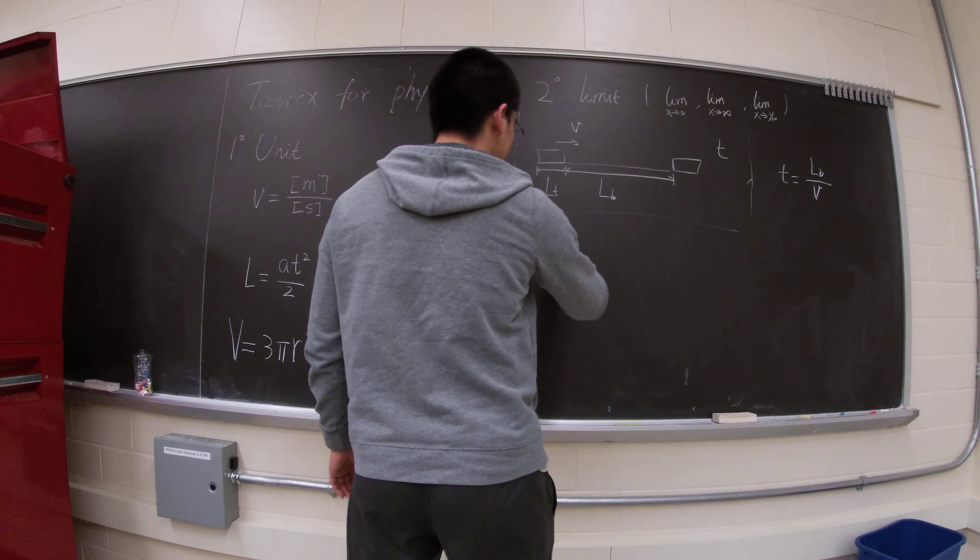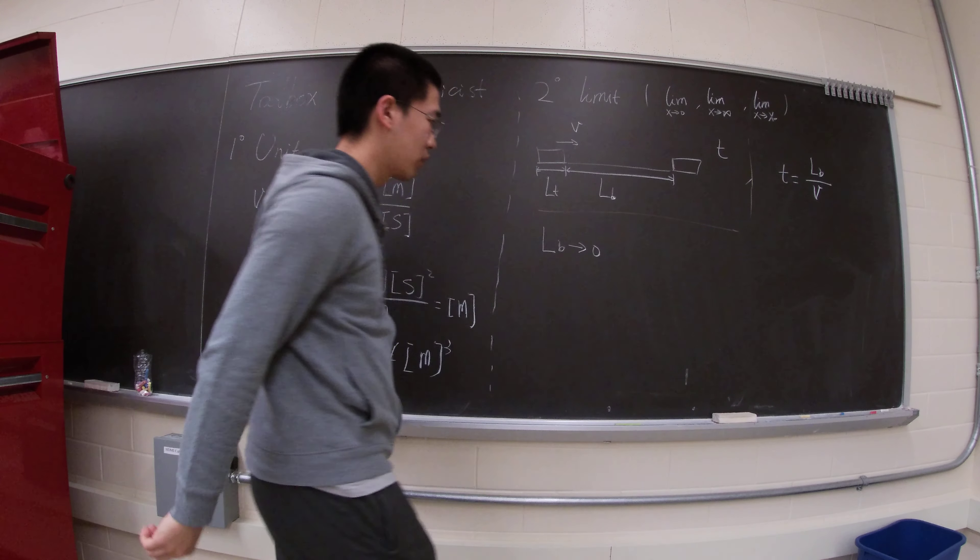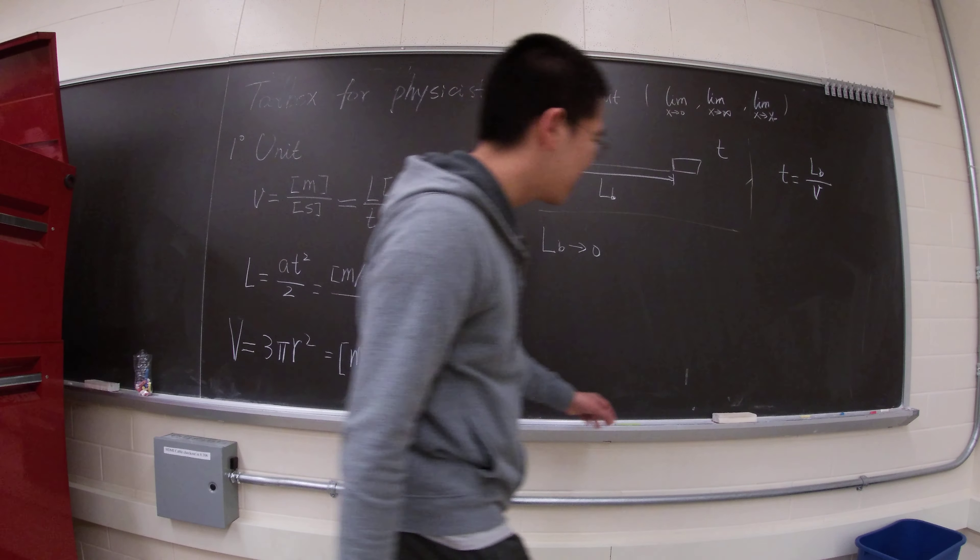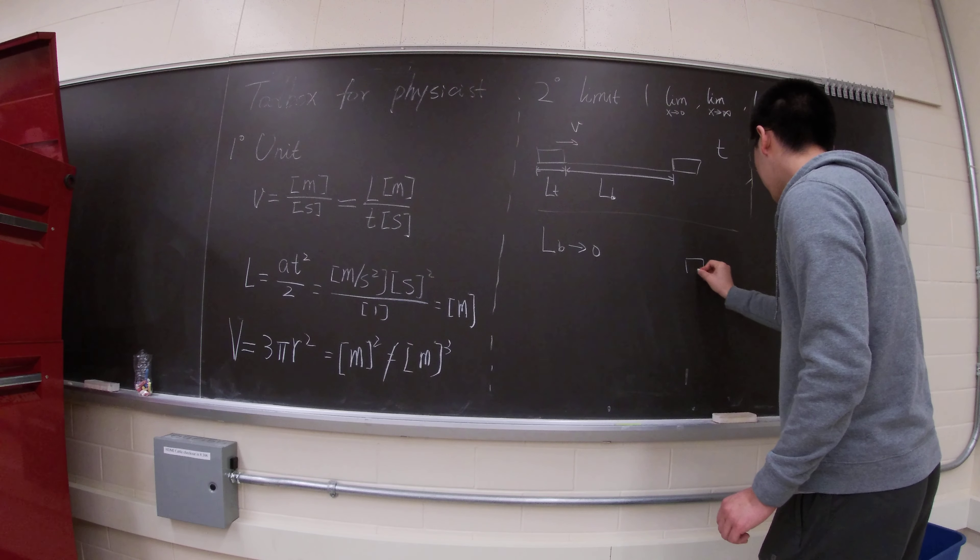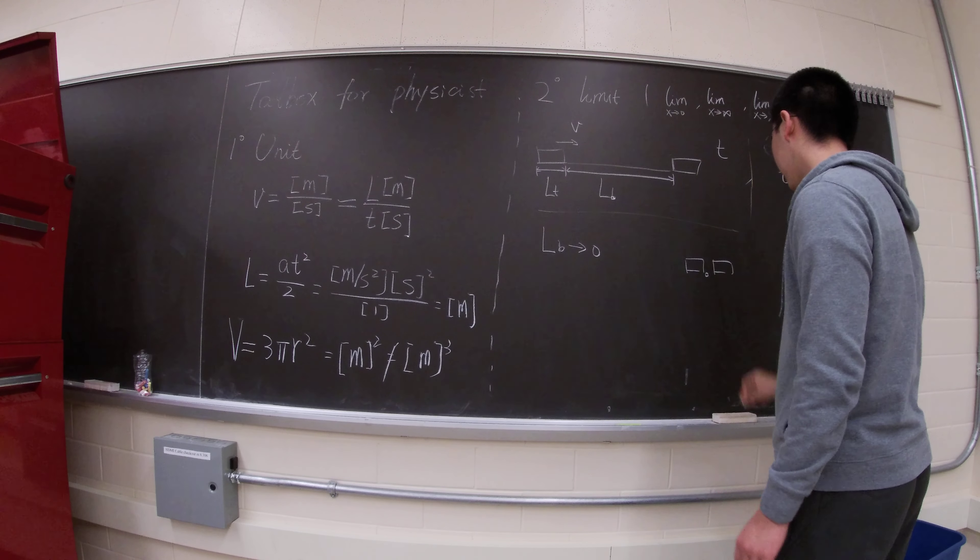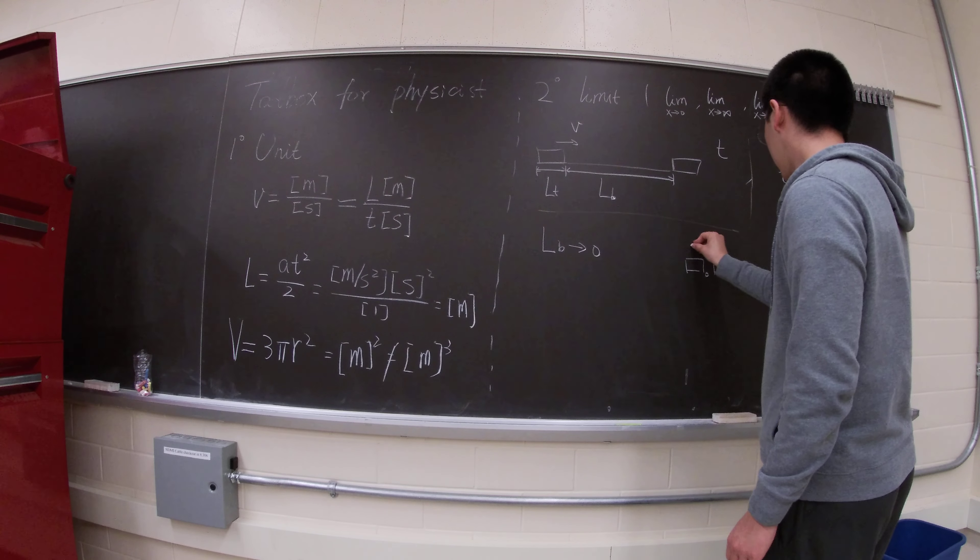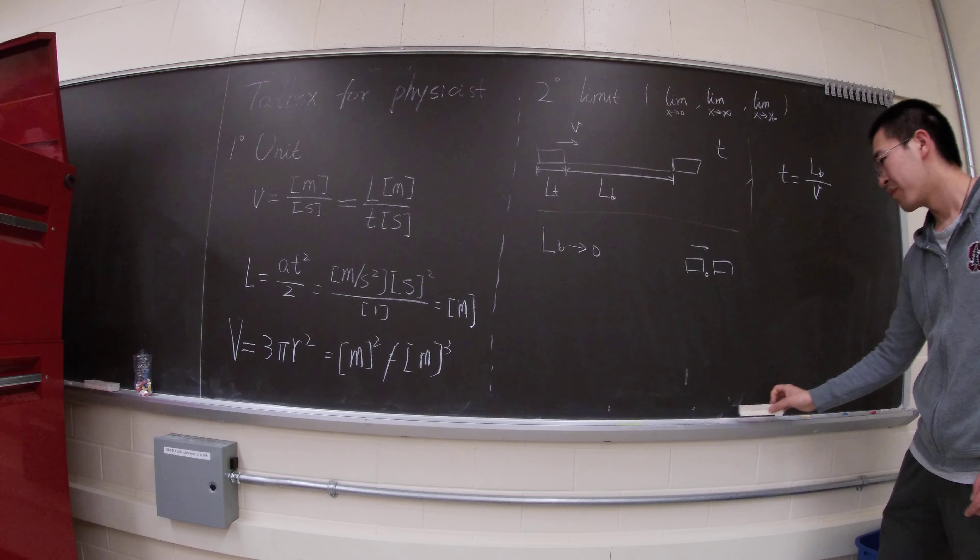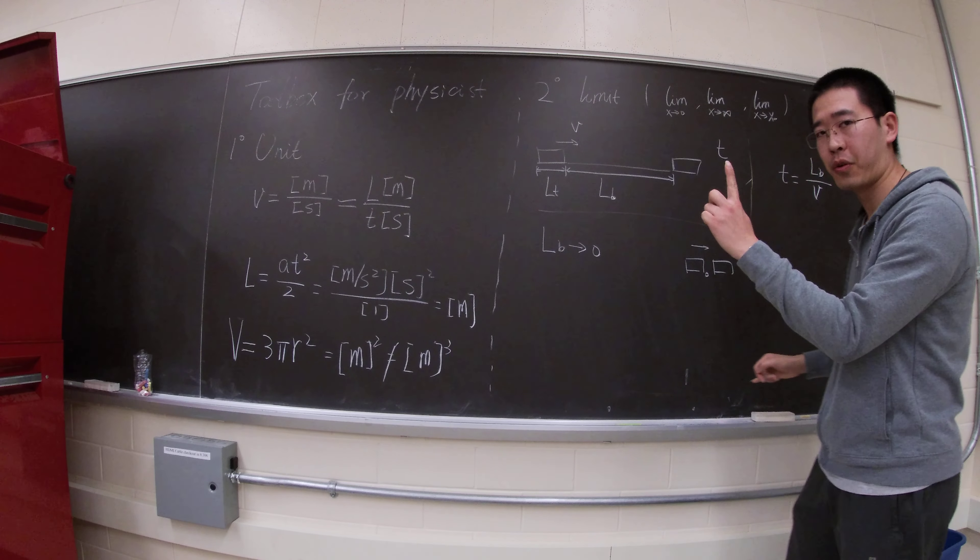So let's take the limit of the bridge going to zero. So as you can think that the bridge is here, then the train has to go from here to here. Right? So, for instance, here my finger is a bridge, we make the length of the bridge to zero.